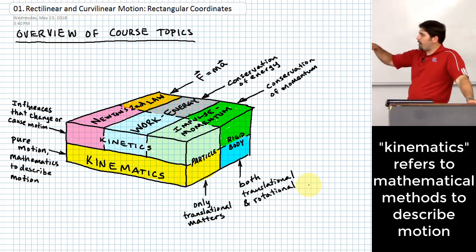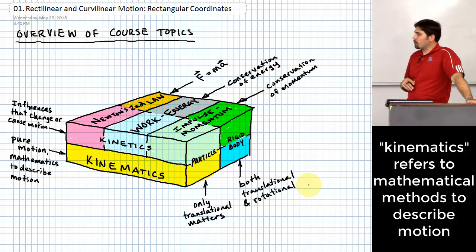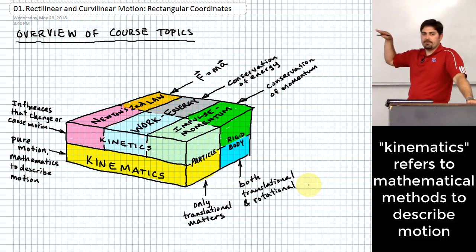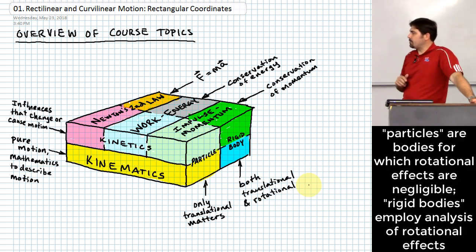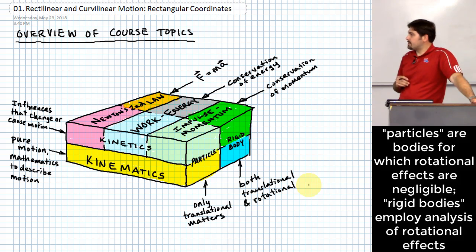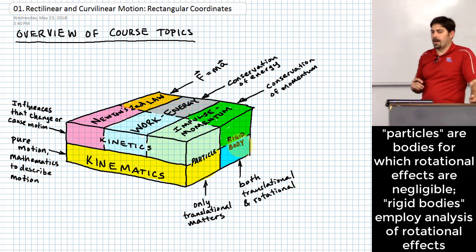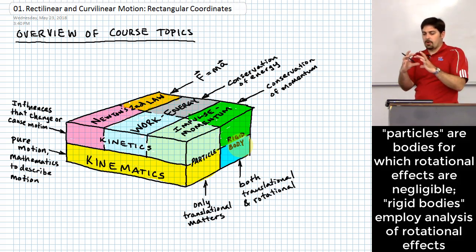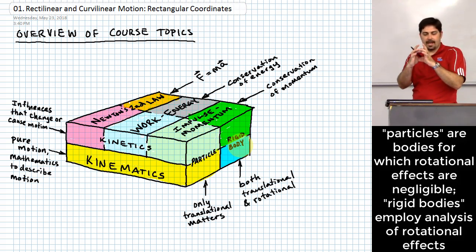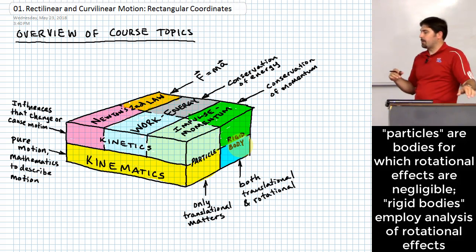All the rest of what we study in dynamics is built upon that foundation. Moving front to back, we actually have two different kinds of kinematics we can study: we can study the motion of things considered particles, or the motion of things considered more like a rigid body. A particle is basically something where the size is not really important.